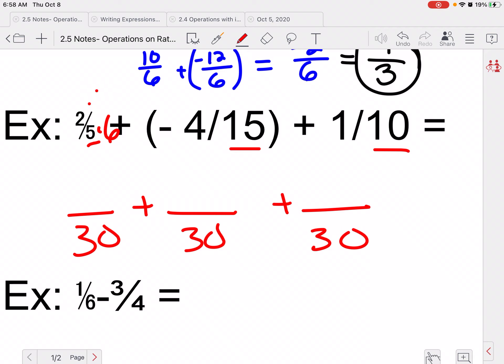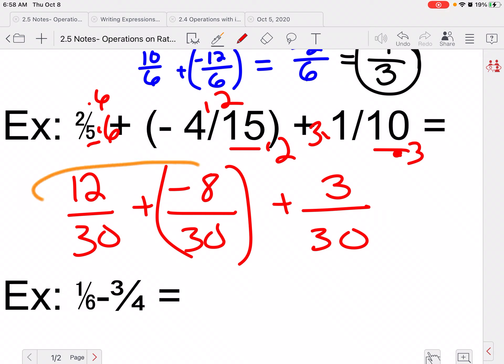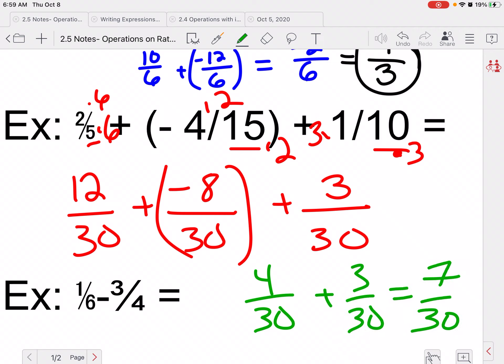So 5 times 6 gives me 30. So I'm going to multiply the top by 6 to get 12. To get 30 over here, I multiply by 2. -4 times 2 is -8. And then to get to 30 here, I multiply by 3. So I multiply the top by 3 to give me 3. So now I'm going to do just like what I did before. So 12 plus -8 would give me a positive 4. So this would be 4/30 plus 3/30, which gives me 7/30. And that cannot be reduced.